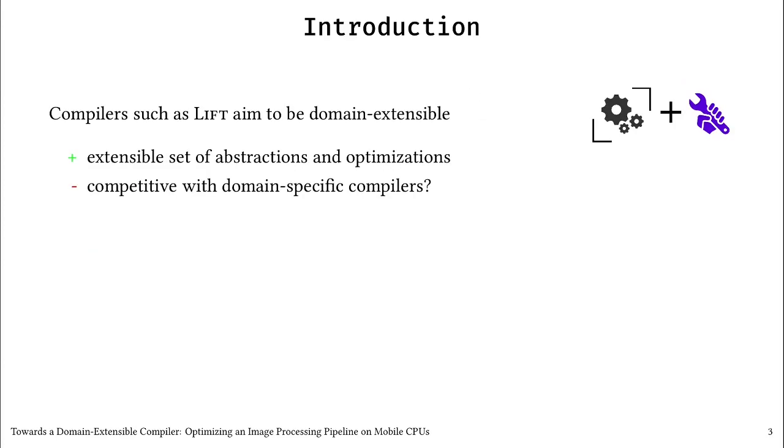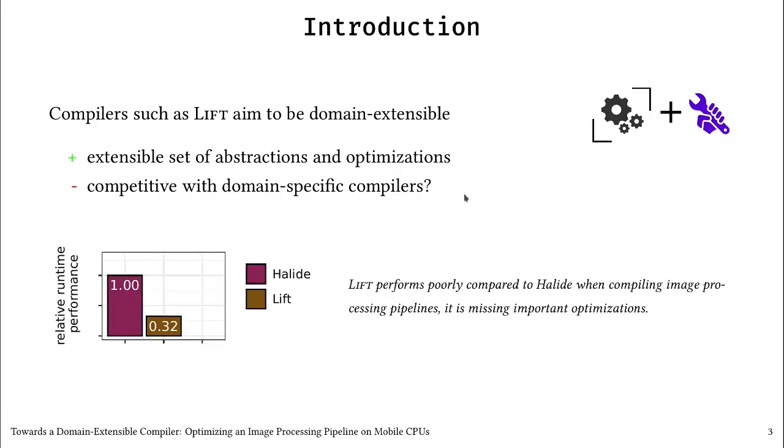This is why there is a strand of compilers such as LIFT that aim to be domain extensible. Such compilers are more flexible because they have an extensible set of abstractions and optimizations. However, are domain extensible compilers competitive with domain-specific compilers? In practice, we observed that LIFT performs poorly compared to Halide on image processing pipelines. As you can see on this figure, LIFT only reaches a third of the runtime performance achieved by Halide on our case study. This poor performance is explained by the absence of optimizations that are important and well-known in the image processing domain.